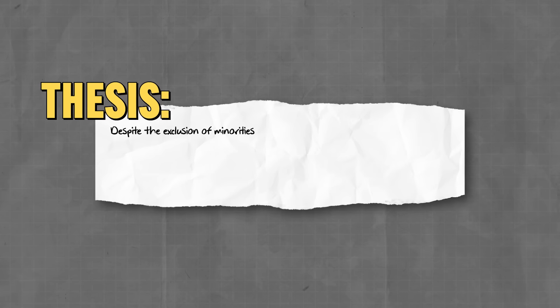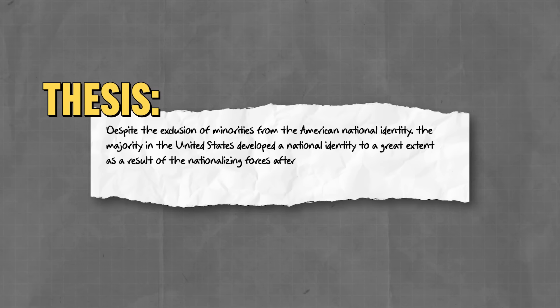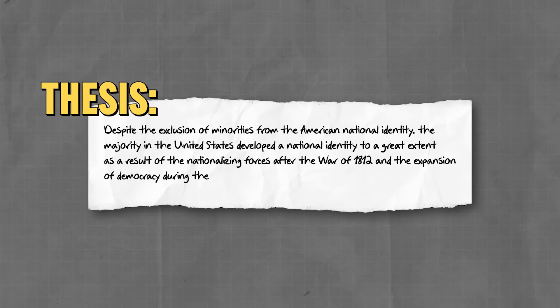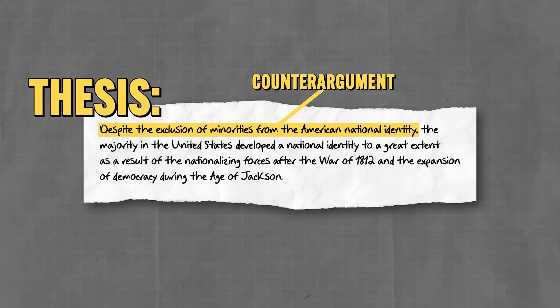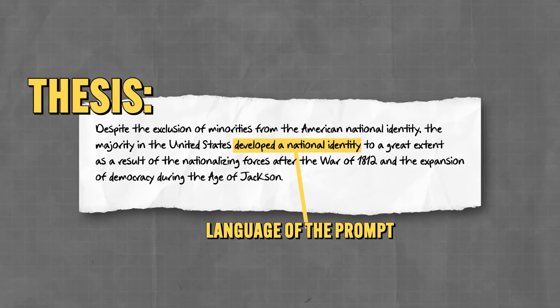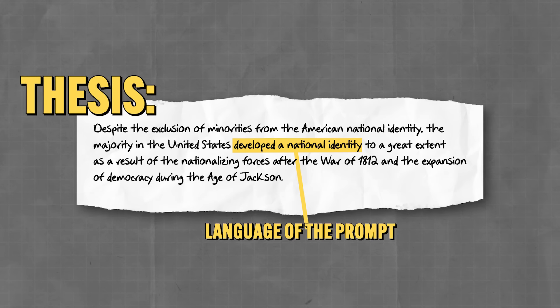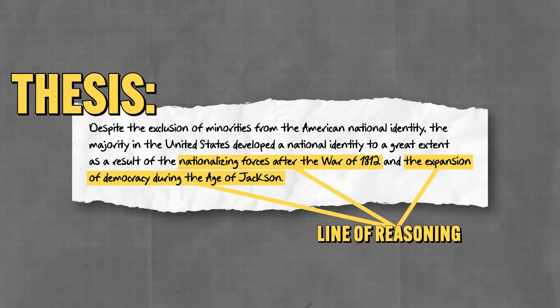Watch what happens when we establish a line of reasoning: 'Despite the exclusion of minorities from the American national identity, the majority of the United States developed a national identity to a great extent as a result of the nationalizing forces after the War of 1812 and the expansion of democracy during the Age of Jackson.' Notice three things: I acknowledge a counter-argument, I use the language of the prompt, and I establish a line of reasoning with specific historical evidence. That thesis would earn the point — pack it tighter than a Scottish haggis and you'll be golden.